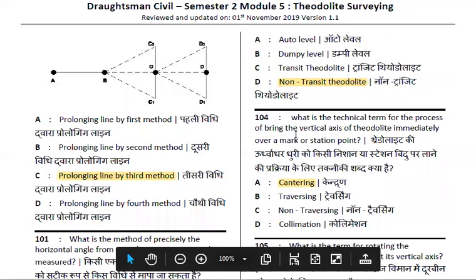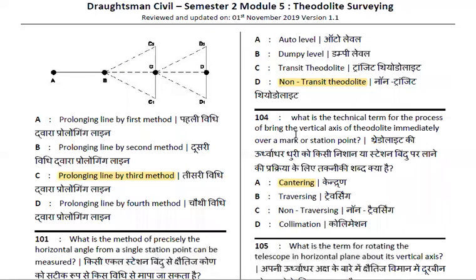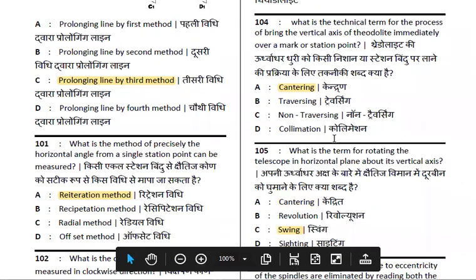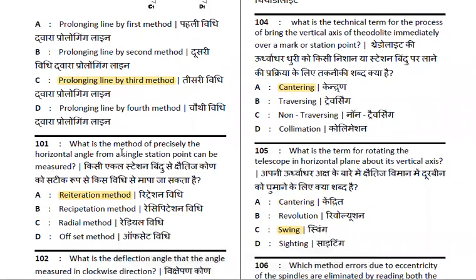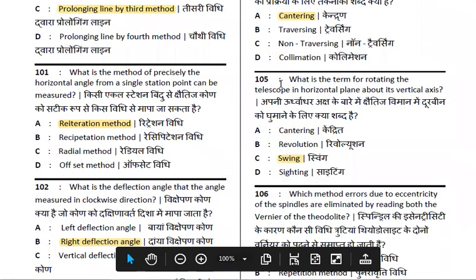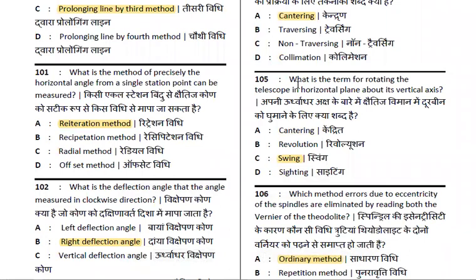The process of bringing the vertical axis of the theodolite exactly over the mark of the station point is called centering. The hair on the object in the line of collimation relates to the technical term collimation. The process of rotating the telescope in the horizontal plane about the vertical axis is called swinging. Rotation in the horizontal axis is called revolving.